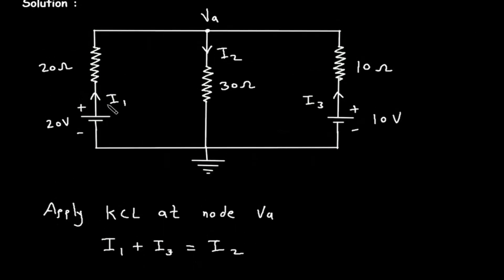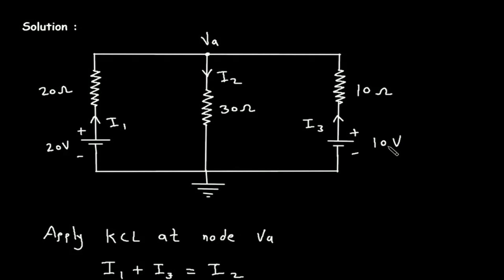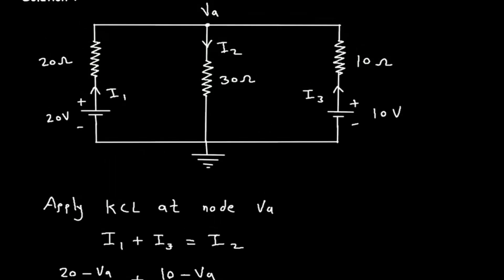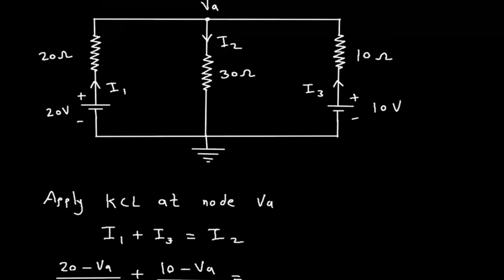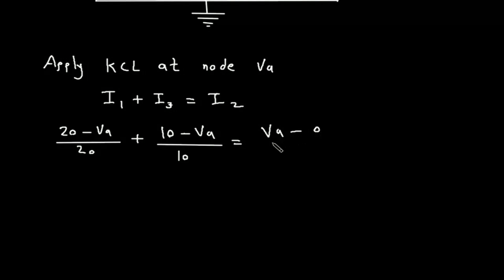I1 will be higher voltage, that is 20 volts, minus lower voltage VA, divided by resistance 20. So I1 is equal to (20 minus VA) divided by 20 ohm. Similarly for I3, I3 will be (10 minus VA) divided by 10 ohm. And I2 is equal to VA minus 0 divided by 30, since the ground node voltage is 0.